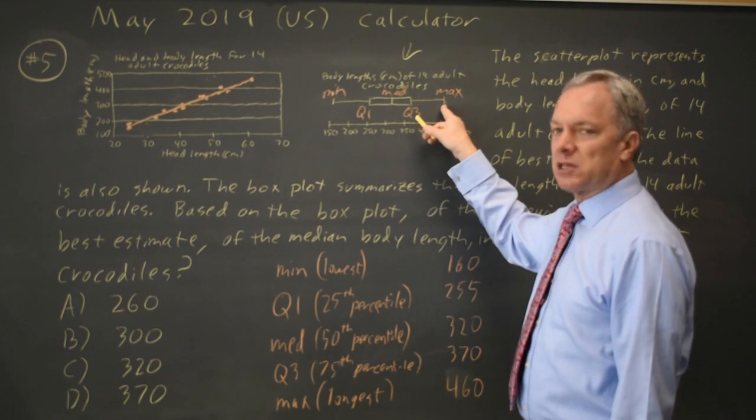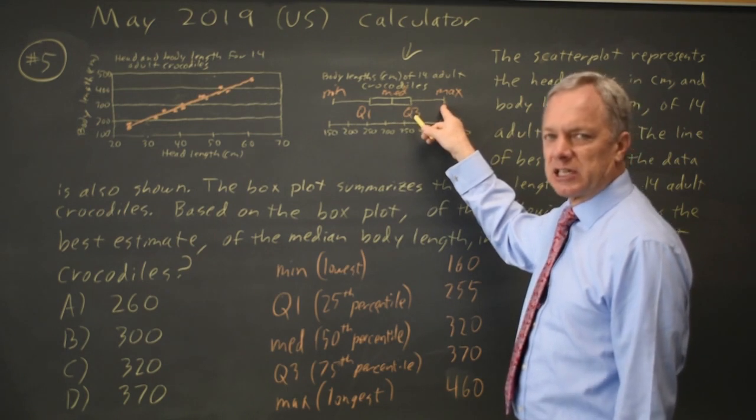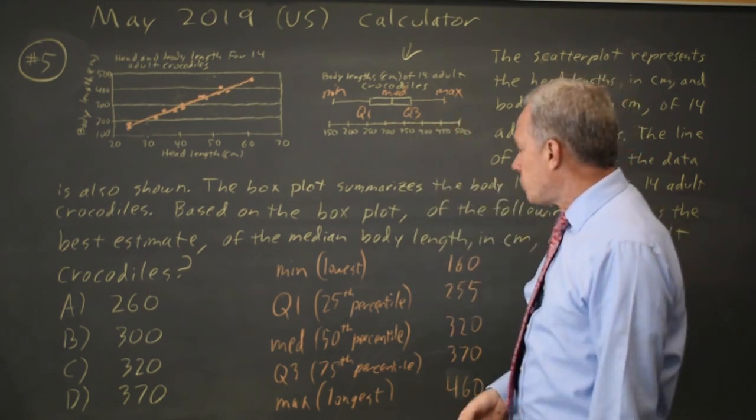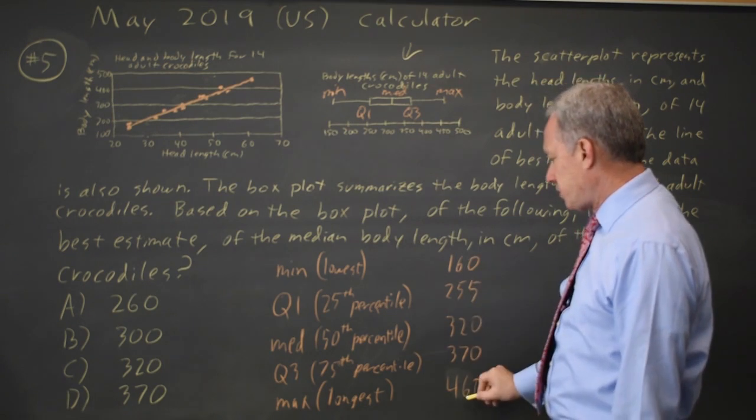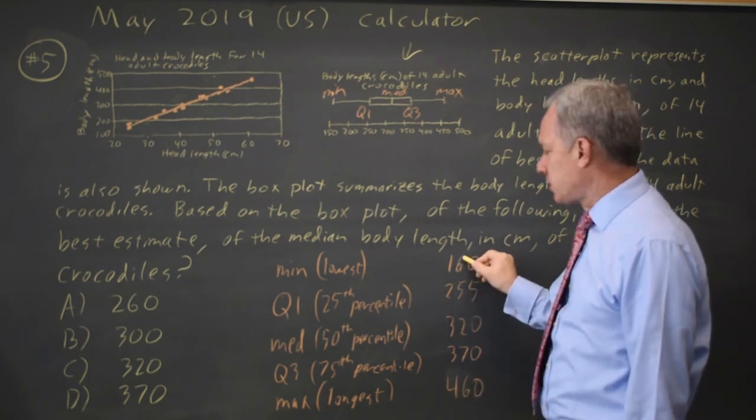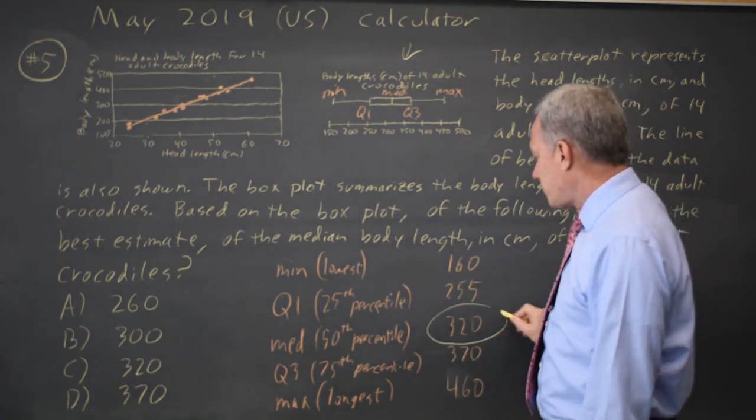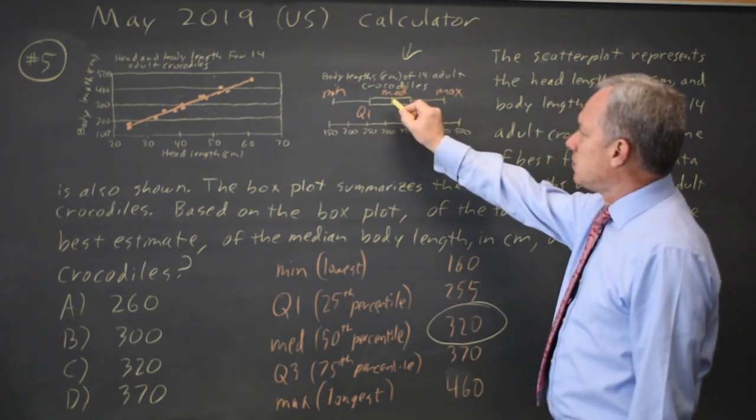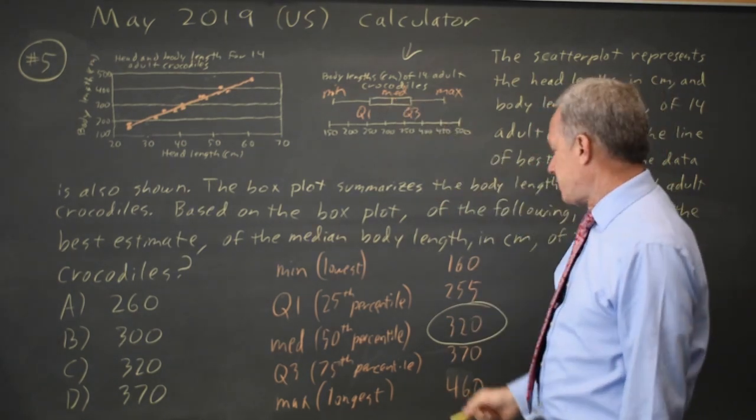The high end of the second skinny line is the maximum value. You can find the range, which is the difference between the maximum and the minimum length. You can find the median, which is what they're asking for, and that is the vertical line within the rectangle.